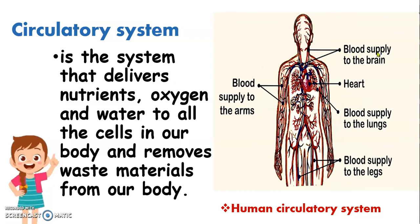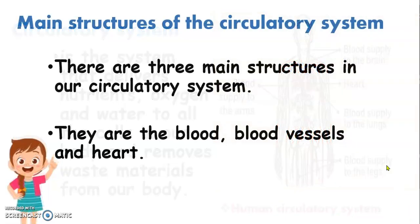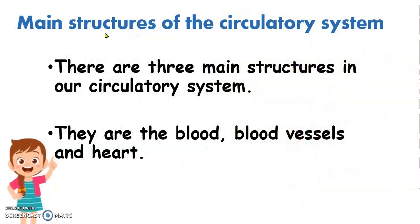Here we can see blood supply to the brain, blood supply to the heart, blood supply to the lungs, blood supply to the arms, and blood supply to the legs. There are three main structures in our circulatory system.